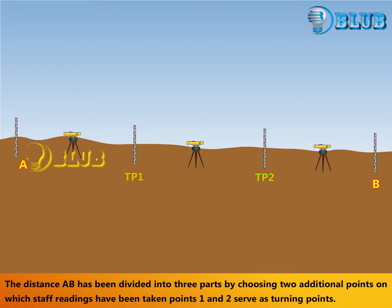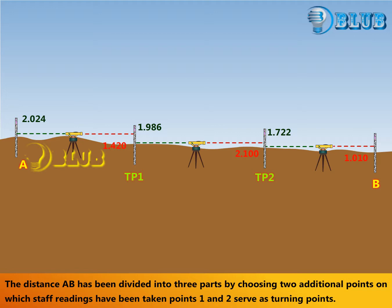The distance AB has been divided into three parts by choosing two additional points on which staff readings have been taken. Points 1 and 2 serve as turning points.